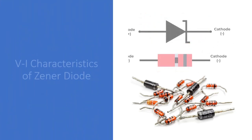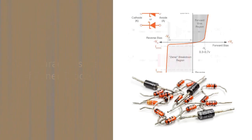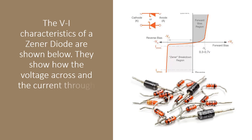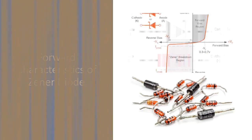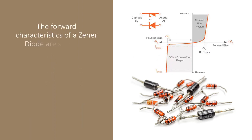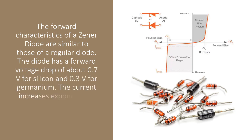The VI characteristics of a Zener diode show how the voltage across and the current through the diode vary with different biasing conditions. The forward characteristics of a Zener diode are similar to those of a regular diode. The diode has a forward voltage drop of about 0.7V for silicon and 0.3V for germanium. The current increases exponentially with the increase in forward voltage.